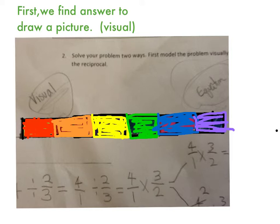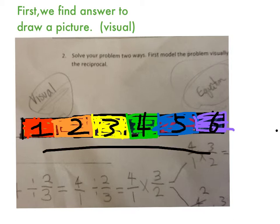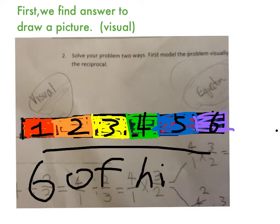I think we find the answer. One, two, three, four, five, six. Six of his friend get a cake.